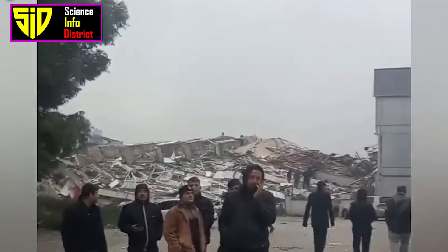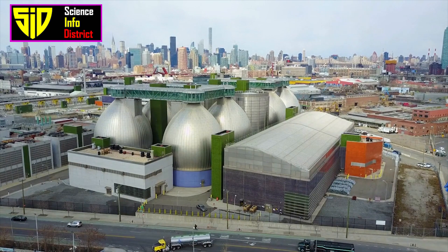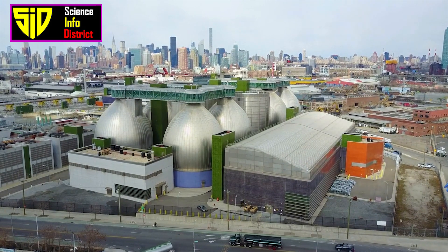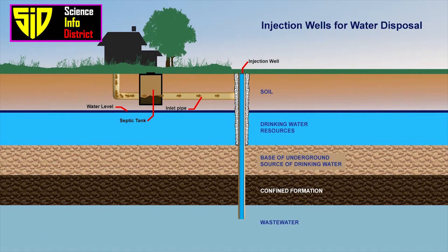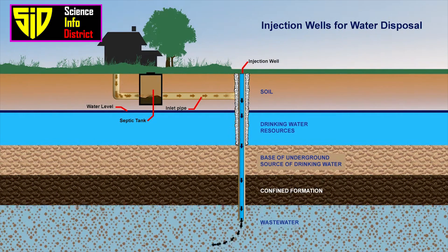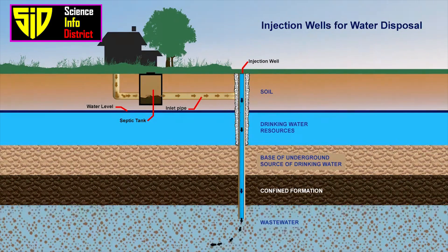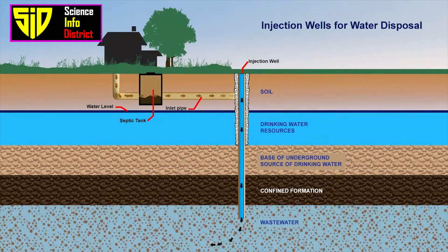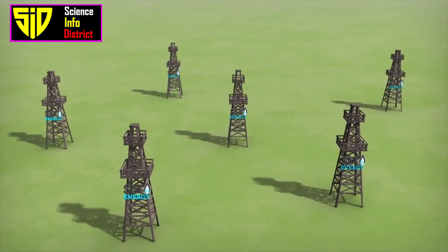Wastewater injection can also cause earthquakes. Water that is salty or polluted by chemicals needs to be disposed of in a manner that prevents it from contaminating freshwater sources. It is usually most economical to isolate and inject it into deep underground wells below any aquifers that provide drinking water. This process is known as wastewater injection, and wastewater injection wells typically operate for years or decades.